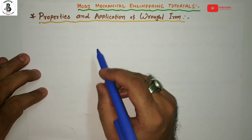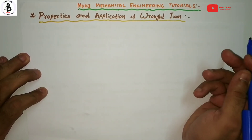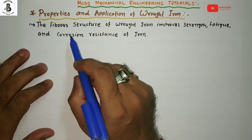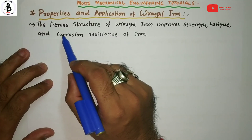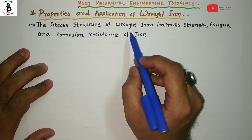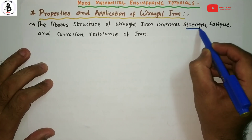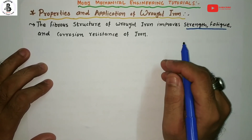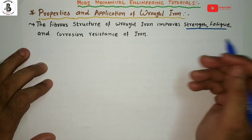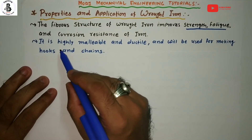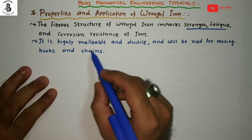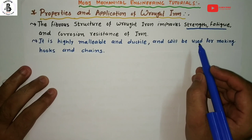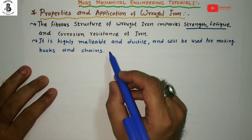Now we will discuss the properties and applications of wrought irons. As discussed in the definition, wrought iron has a fiber structure. Due to the presence of this fiber structure, the strength, fatigue resistance, and corrosion resistance of the iron are improved. These wrought irons are highly malleable and ductile, and are commonly used for making hooks and chains.